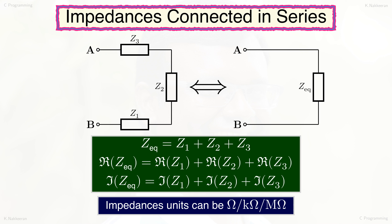Impedance units can be ohm, kiloohm, or megaohm. The user can input the real part, imaginary part, and unit of the impedance for the C code, to calculate and display the equivalent impedance as a complex quantity in the major unit of the three input impedances. In developing the algorithm, we introduce a unit scaling factor that will be assigned 1, 1000, or 1 million for impedance units of ohm, kiloohm, or megaohm respectively.